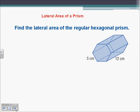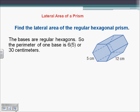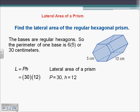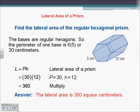Here we're asked to find the lateral area of a regular hexagonal prism. A hexagon has six sides, so the perimeter of that base is six times the side length of five, giving us 30 centimeters. We then multiply by the height to get our lateral area: 30 times 12 equals 360 square centimeters.